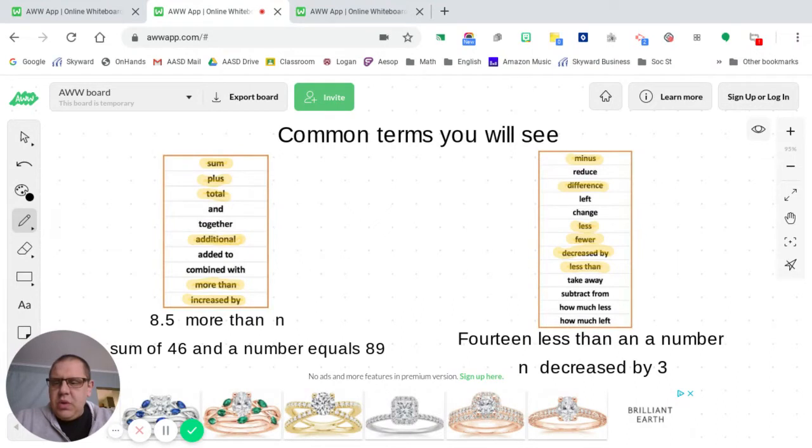And so I've provided two examples there for you using two different terms. Eight and a half more than N. Another example. The sum of 46 and a number equals 89. So you've seen the word more than and you've seen the word sum.